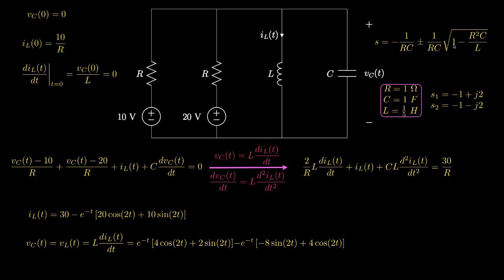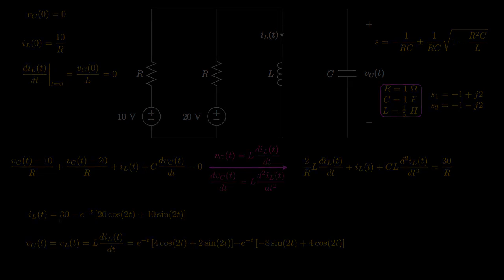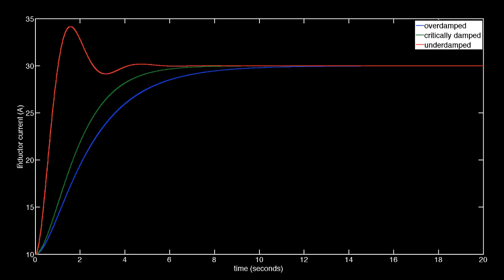When the quantity inside the square root is negative we have the underdamped case; when it is zero, critically damped; and when positive, overdamped. Here are three plots of the inductor current as a function of time. The blue plot corresponds to the overdamped situation, the green to critically damped, and the red to the underdamped situation. When underdamped, we get oscillation but reach the final value a bit quicker; critically damped and overdamped have no oscillation, but overdamped takes longer to reach the final value.